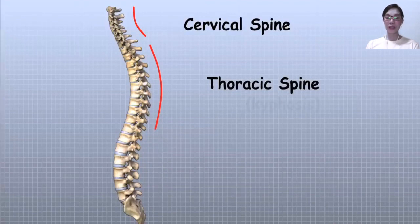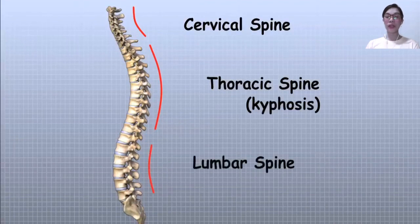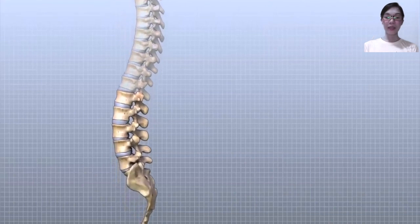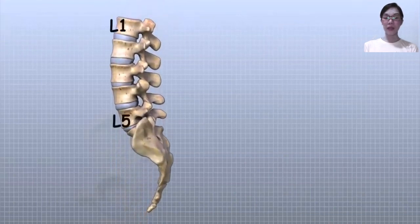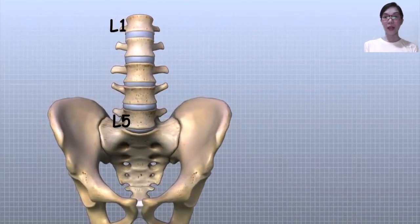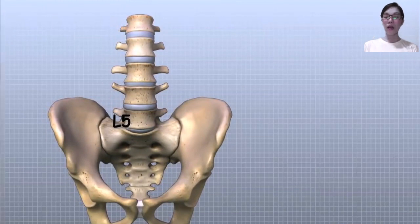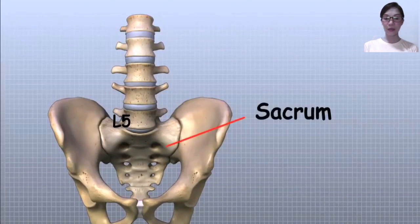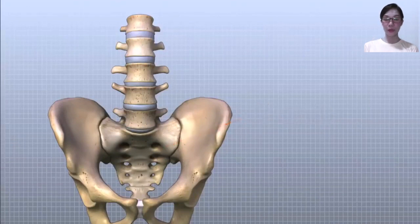The outward curve of the thoracic spine is called kyphosis. The low back, also called the lumbar spine, curves slightly inward — an inward curve of the spine called lordosis. The lumbar spine is made up of the lower five vertebrae; doctors often refer to these vertebrae from L1 to L5. The lowest vertebra, L5, connects to the top of the sacrum, a triangular bone at the base of the spine that fits between two pelvic bones.